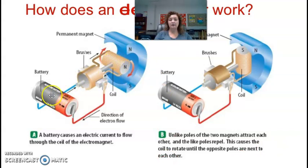So if you look at this, it says a battery causes an electric current to flow through the coil of an electromagnet. So essentially, the first step is make an electromagnet, right? And then we're going to put it around. So here's our electric magnet, our electromagnet, right? Here's our coil of wire. Here's our battery. And we're going to put it around a permanent magnet.